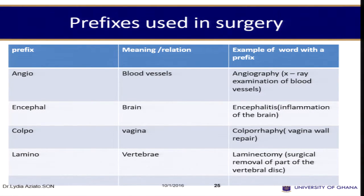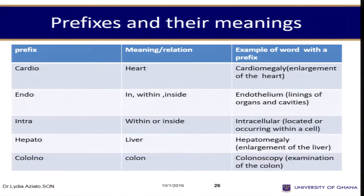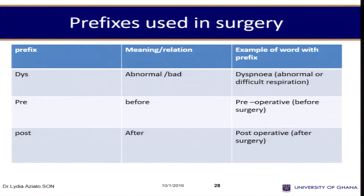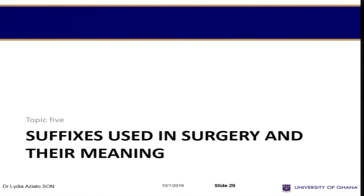Please go to your slides on Sakai to review these. For example, the prefix 'angio' refers to blood vessels — so angiography is an examination of the blood vessels. 'Encephal' refers to the brain, so encephalitis, encephalopathy, etc. 'Colpo' refers to the vagina, 'lamino' refers to the vertebrae. I have a number of these prefixes available in your Sakai slides.